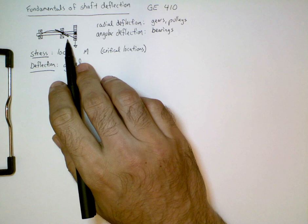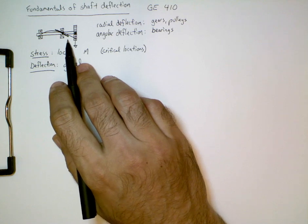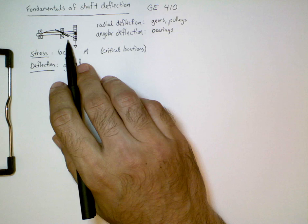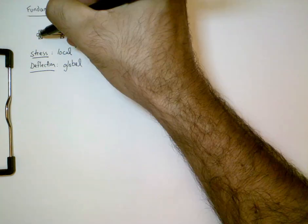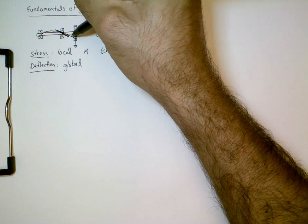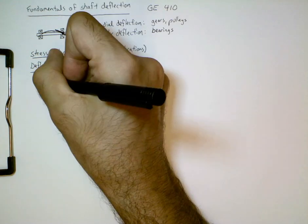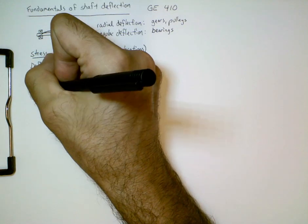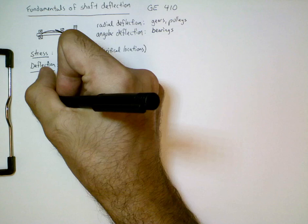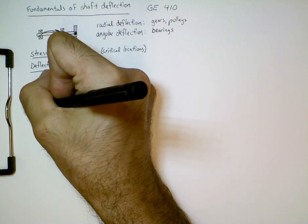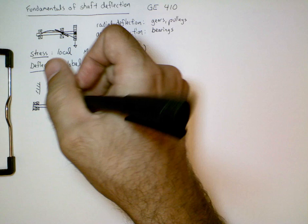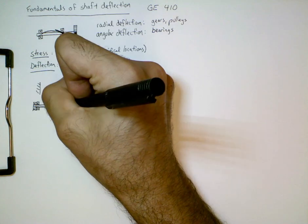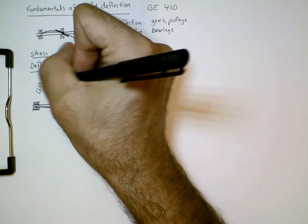Shafts really behave like beams, and you've already learned a lot about analyzing the deflection and stress inside of beams, so a lot of this is going to look familiar. When we think about the deflection of a shaft, it's going to have some kind of curved shape. Suppose we have a shaft supported by a set of bearings on one end and it has some radial force pushing down — we're going to have a deflection that looks something like that. This is going to be very similar to a cantilever beam, which you've analyzed before.